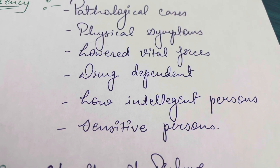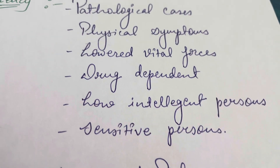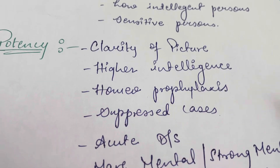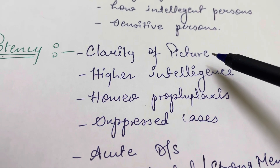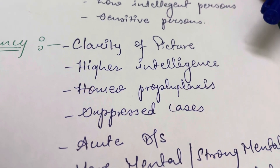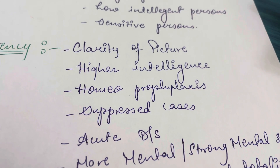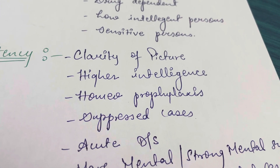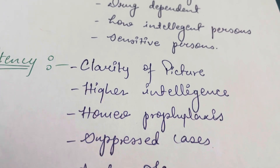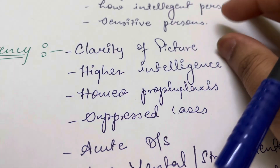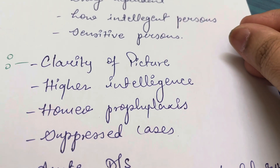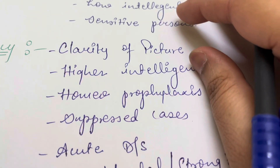When we give higher potency — when there is clarity of picture, meaning the patient has come and you have identified the remedy confidently, start with 200. To give clarity of picture you need to get the exact simillimum; then you can give higher potency.